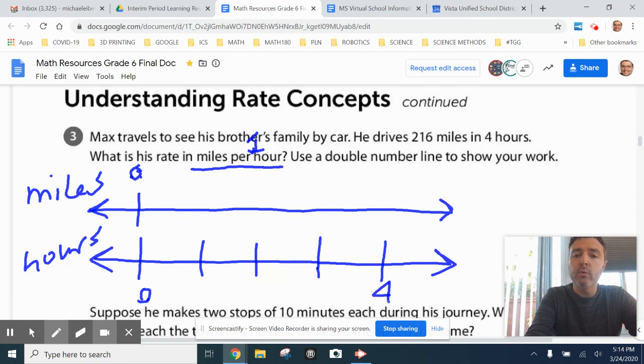And in those four hours, he's traveled 216 miles. So what we'll do is line these tick marks up so that it starts from the four and goes up to the top number line with miles. So in four hours, he's gone 216 miles.